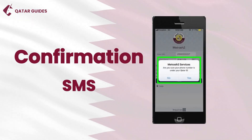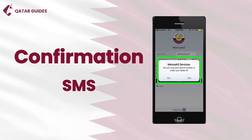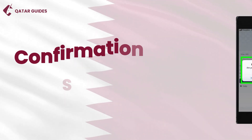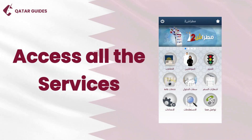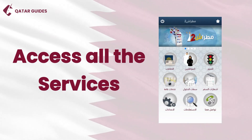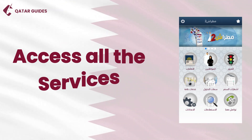Just enter that code and set up a PIN to secure your account — you are good to go. Once you have completed these steps, you will get a confirmation SMS. Now you are all set to access all the services Metrash 2 offers.